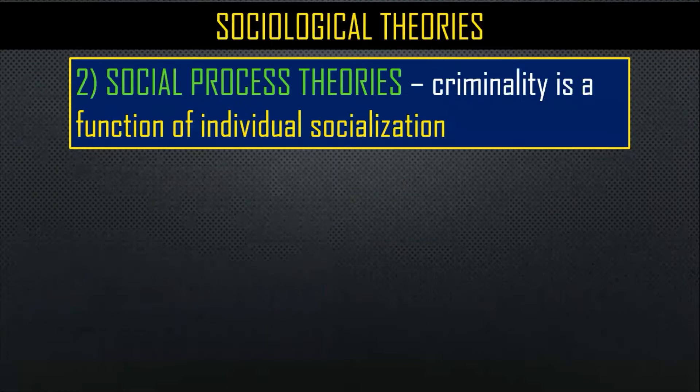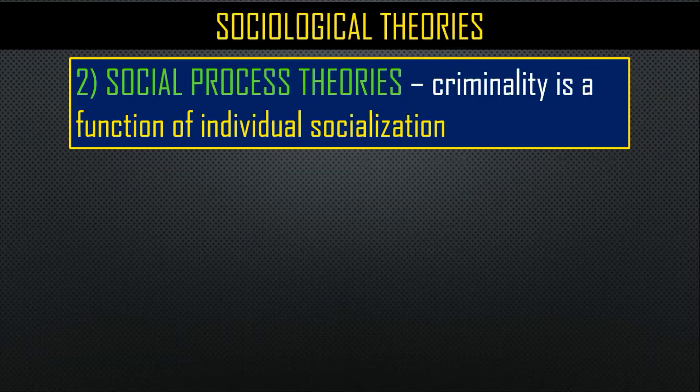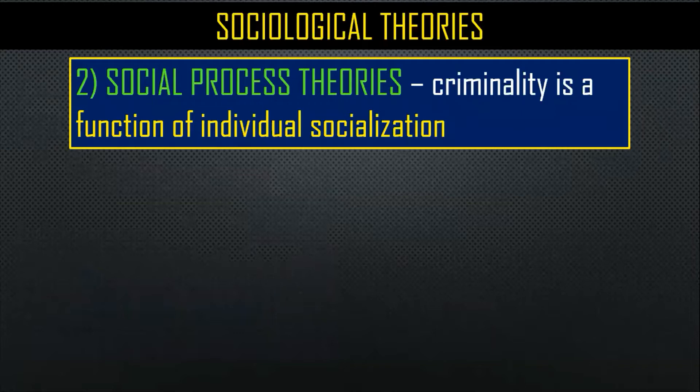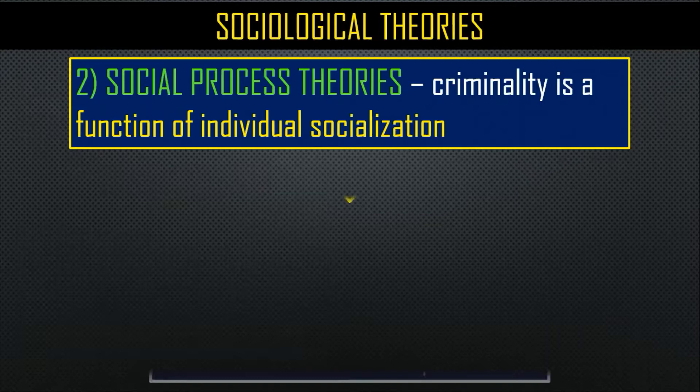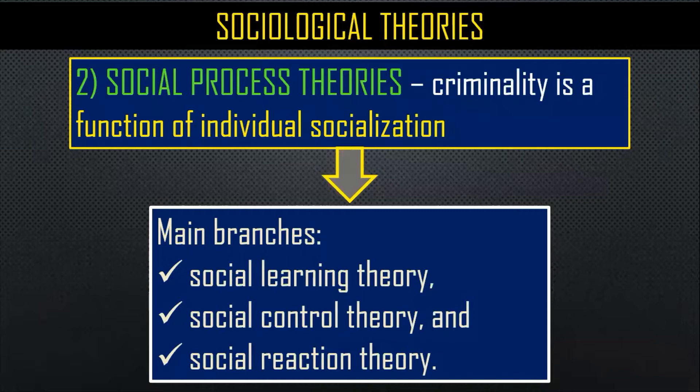On the other hand, social process theories refer to the function of the individual — how you socialize as an individual. While social structure concerns the entirety of a social organization, social process talks about the individual's relationship with other people in society. The main branches are the social learning theory, the social control theory, and the social reaction theory.